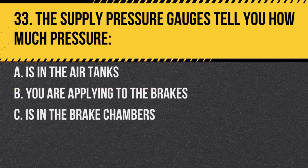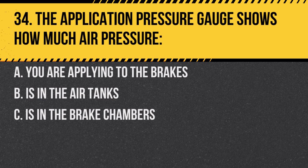Question 33. The supply pressure gauges tell you how much pressure: A. Is in the air tanks. B. You are applying to the brakes. C. Is in the brake chambers. Answer A. Is in the air tanks. They indicate available air pressure.